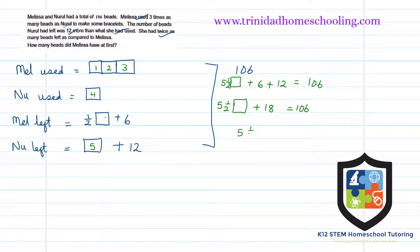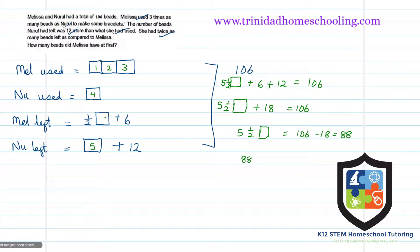Let's take away the 18 from 106: 106 minus 18 gives us 88. So five and a half shares equals 88. Now let's find how much one whole share is. If five and a half — that's 11 over 2 — shares equals 88, we invert the fraction to solve.